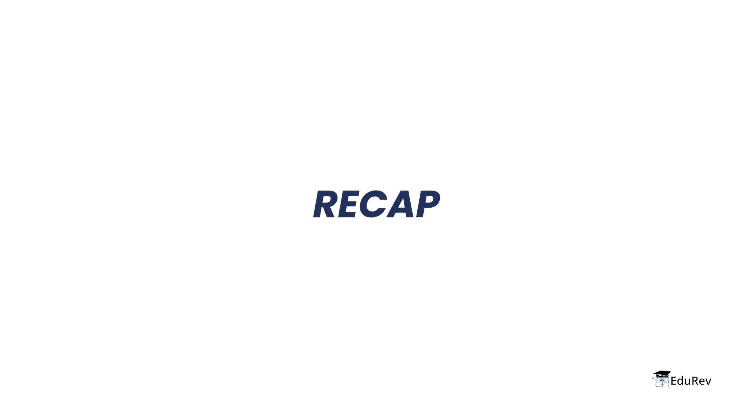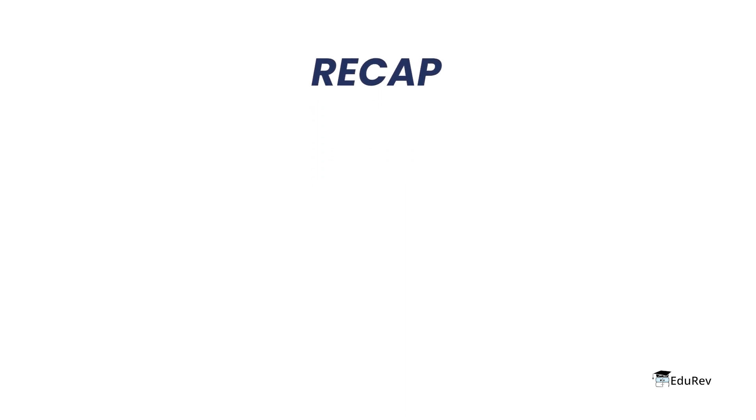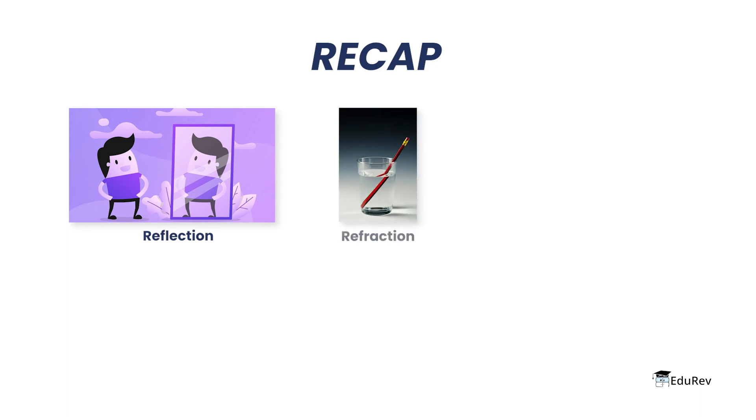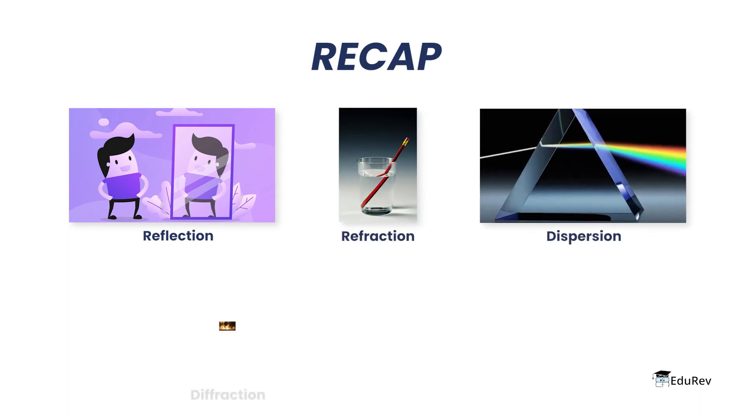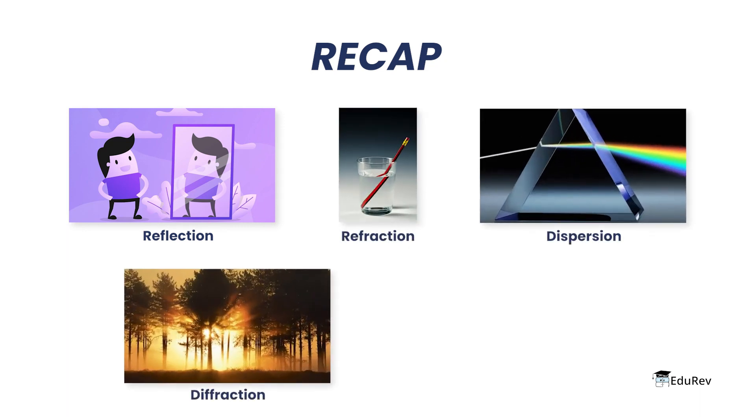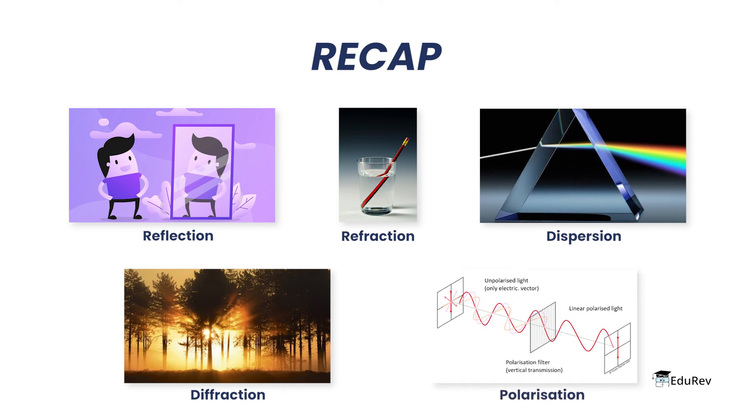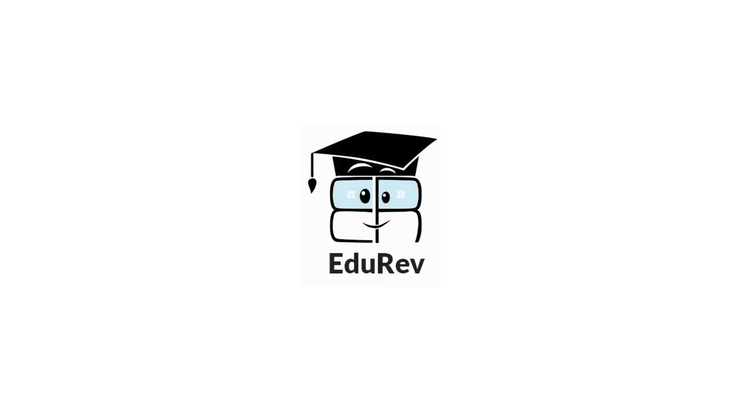With this, we come to an end of our video. Let's recap what all we learned. We started with what is light and moved to its properties. We learned about reflection, refraction, dispersion, diffraction, and finally polarization. I hope you understood it. Now you can go and attempt the respective test on EduRev to cross-check your understanding. Thank you.